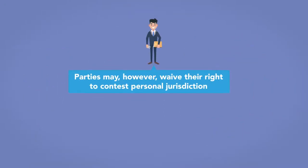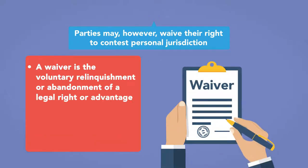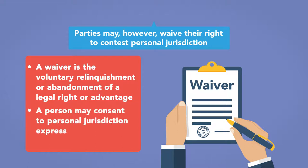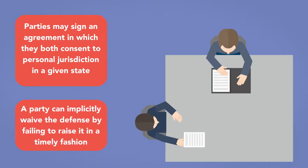Parties may, however, waive their right to contest personal jurisdiction. A waiver is the voluntary relinquishment or abandonment of a legal right or advantage. A person may consent to personal jurisdiction expressly or by implication. For example, parties may sign an agreement in which they both consent to personal jurisdiction in a given state. Moreover, even when a valid personal jurisdiction defense exists, a party can implicitly waive the defense by failing to raise it in a timely fashion.